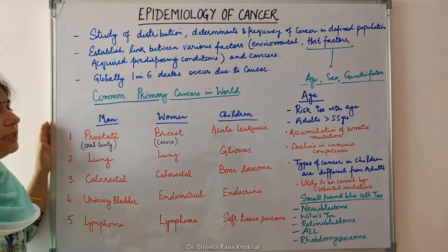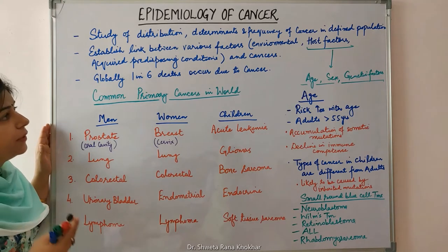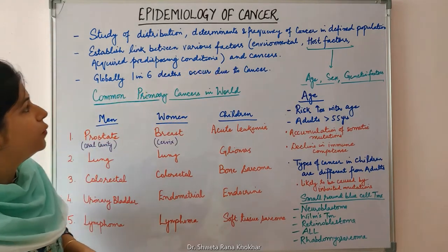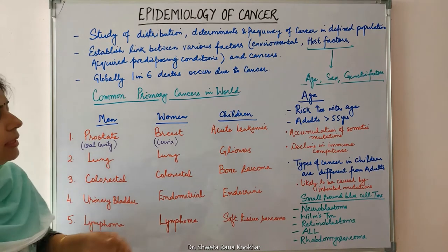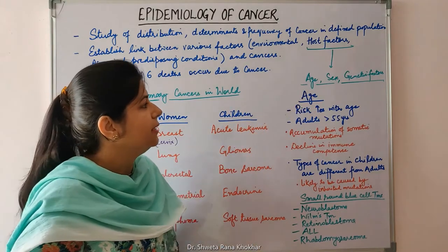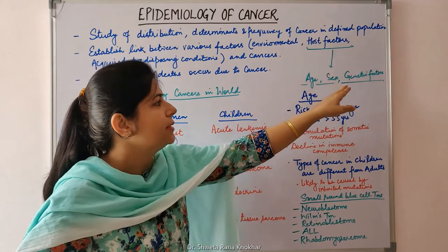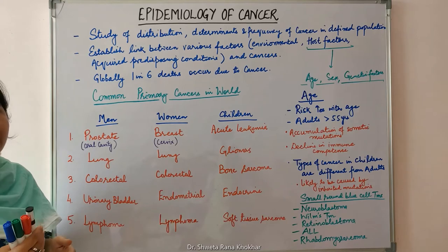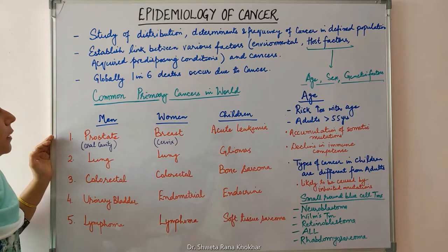The epidemiological studies establish the causative link between various factors and cancers. These factors can be environmental factors, host factors and acquired predisposing conditions. The host factors can be age, sex, genetic factors, and also interaction between the environmental factors and genetic factors is an important determinant in the development of cancers.